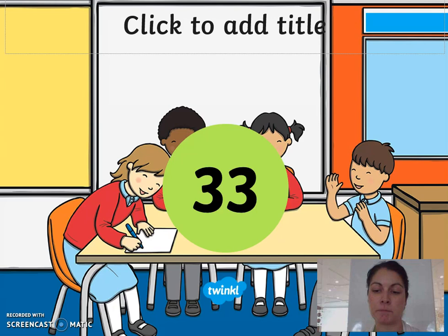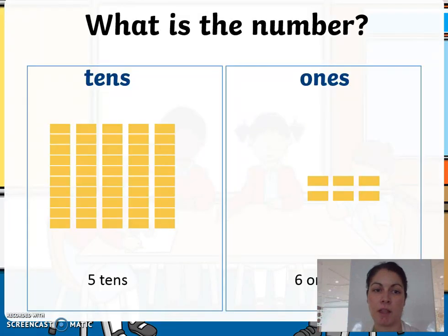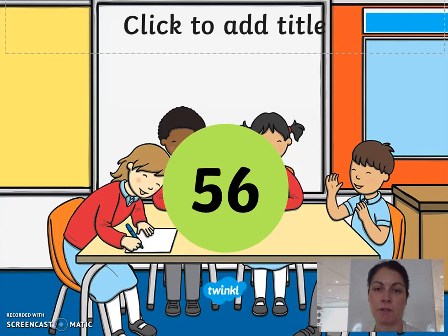Then we have our next slide and we count our tens again: one ten, two tens, three tens, four tens, and five tens. Five tens is equal to fifty. Then we count our ones: one, two, three, four, five, six. So the answer is going to be fifty plus six, which is fifty-six. You can see there it's on the slide.